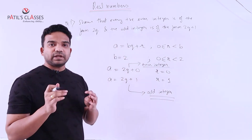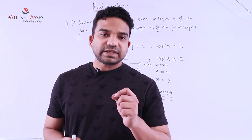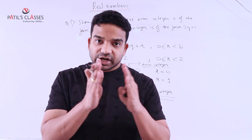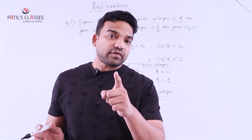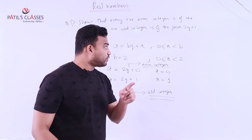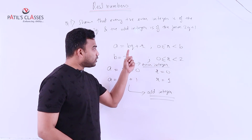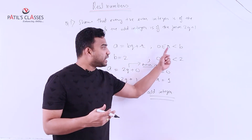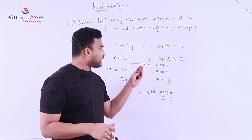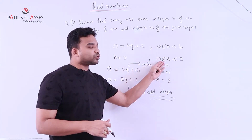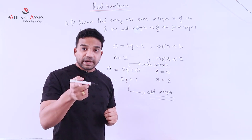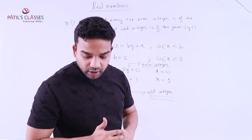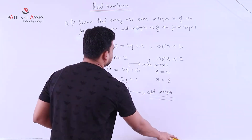How simple it was! We just have to decide the limitation of r — we decide the range of r based on the value of b. If the value of b is 2, then r should be less than 2 and greater than or equal to 0. Depending upon the question, we have to change the range of r. Now, according to the second question, let us see.